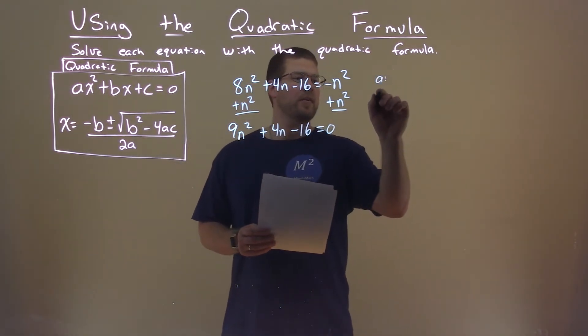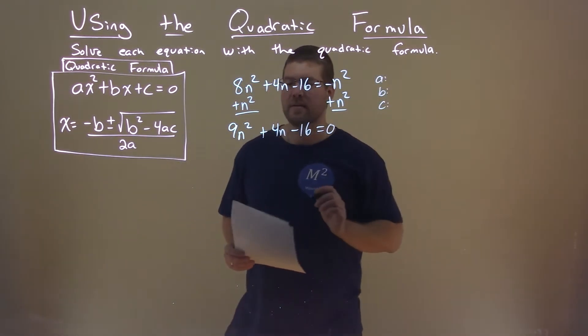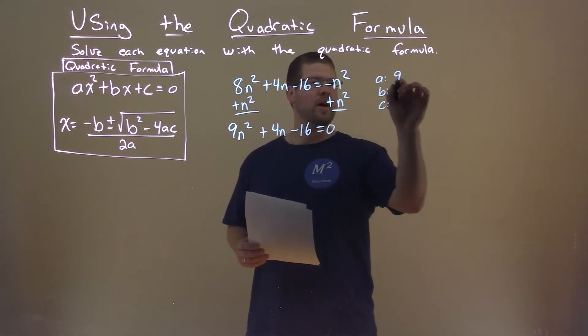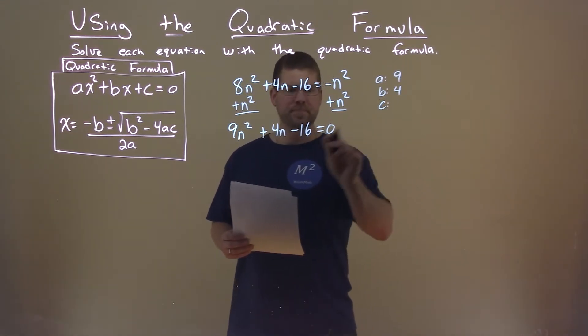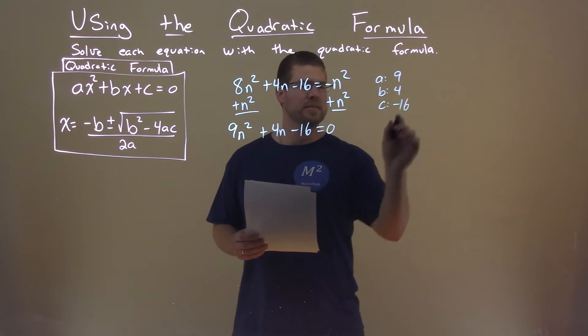So let's go find our a value, b value, and c value. The a value is 9, b value is 4, and c value is negative 16.